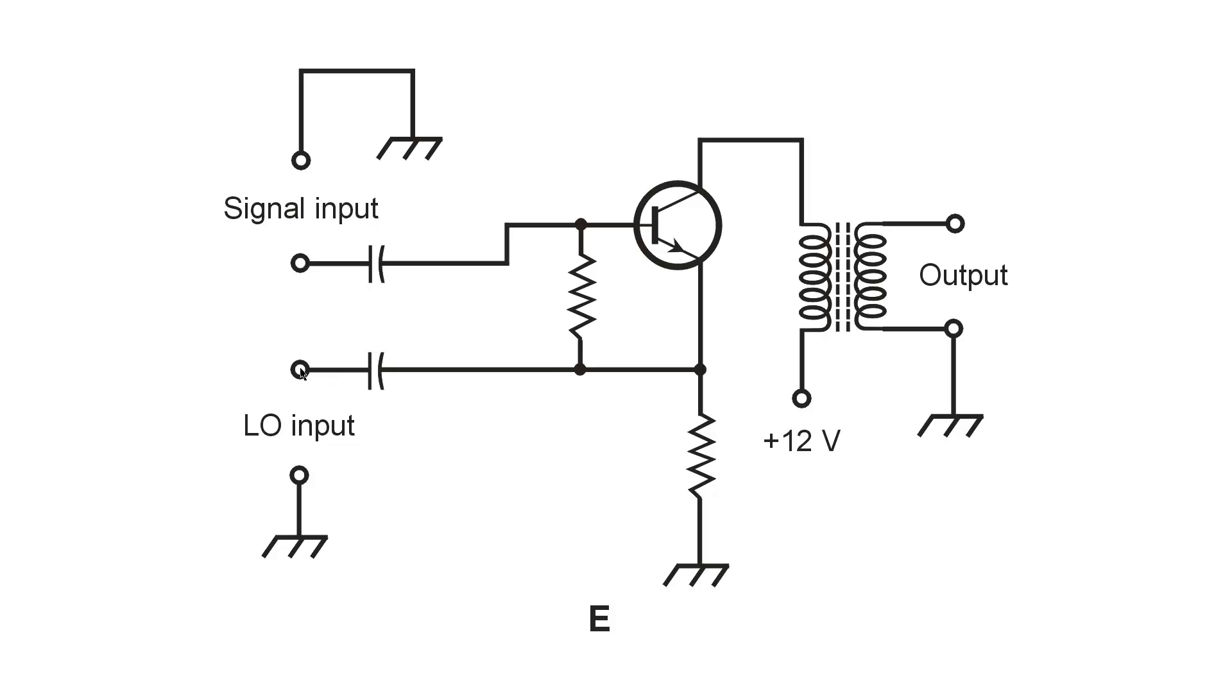and they prevent the input circuits to this stage here from disrupting the bias on this amplifying device, which happens to be an NPN bipolar transistor in this case. It could just as well be PNP or it could just as well be a field effect transistor.